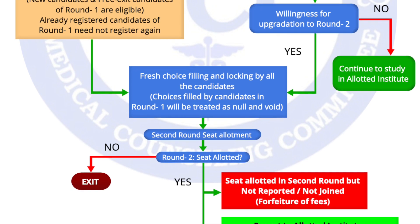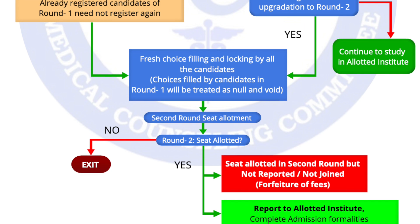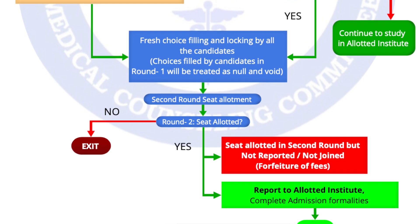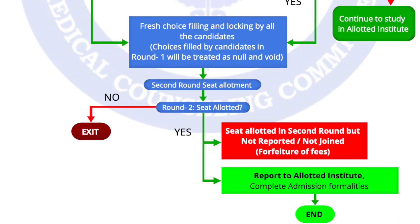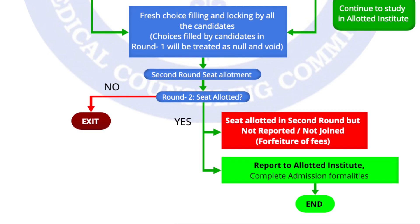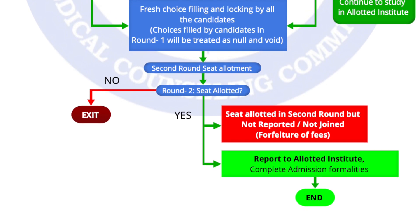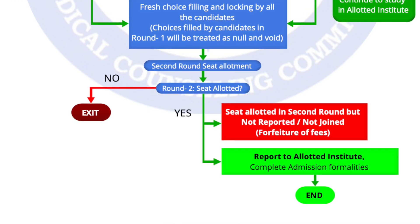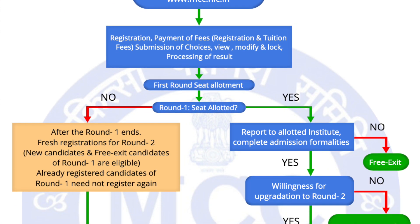There will be fresh choice filling and locking by all candidates, and choices filled in round one will be treated as null and void. In the second round seat allotment, if the seat is not selected by the candidate, they exit the counseling procedure. If they choose a seat allotted in round two but do not report or join, there will be forfeiture of fees. If the candidate reports to the allotted institute, they must complete all formalities pertinent to admission.